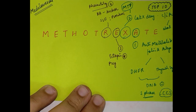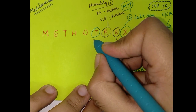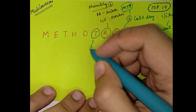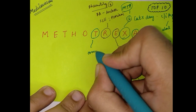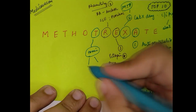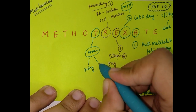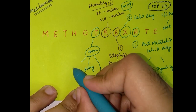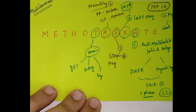Number five — toxicity. Methotrexate is an extremely toxic drug that affects many organs. It causes nephrotoxicity affecting the kidneys, pulmonary toxicity affecting the lungs, and GIT effects because it causes mucositis.